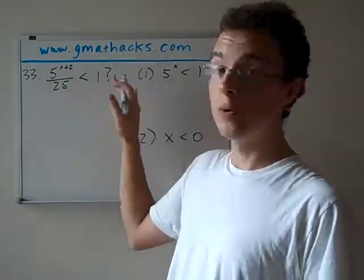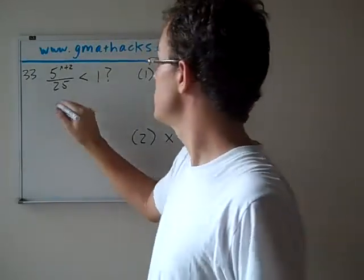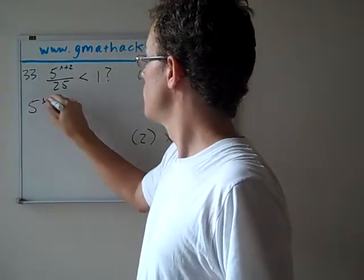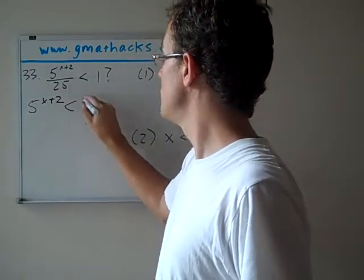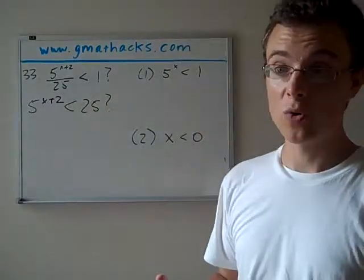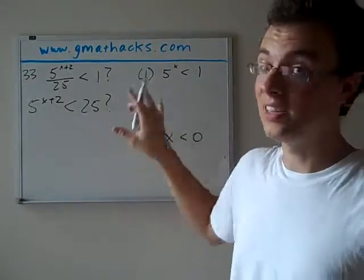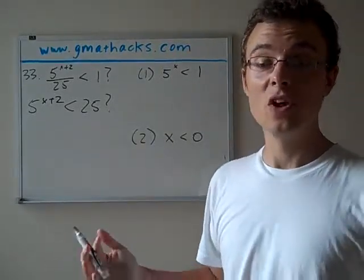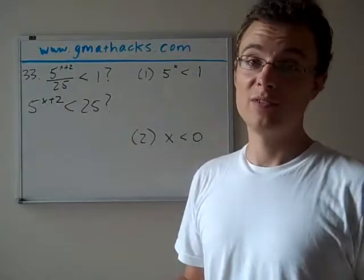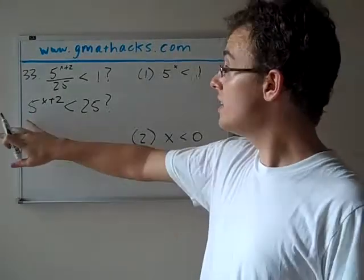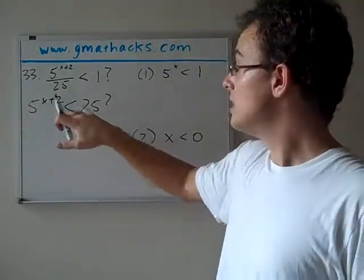So the first thing we can do, multiply both sides by 25, get rid of that fraction. So that leaves us with 5 to the x plus 2 power is less than 25. And as we're simplifying a question, the most important thing to remember is to keep that question mark. In data sufficiency, it's really easy to get confused over what we know and what we're trying to figure out. So in this case, is 5 to the x plus 2 power less than 25?